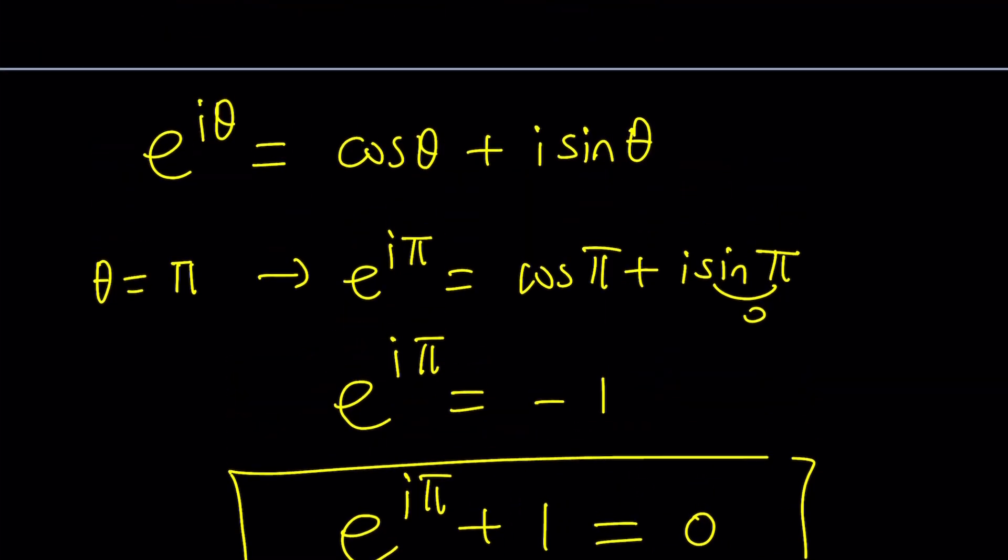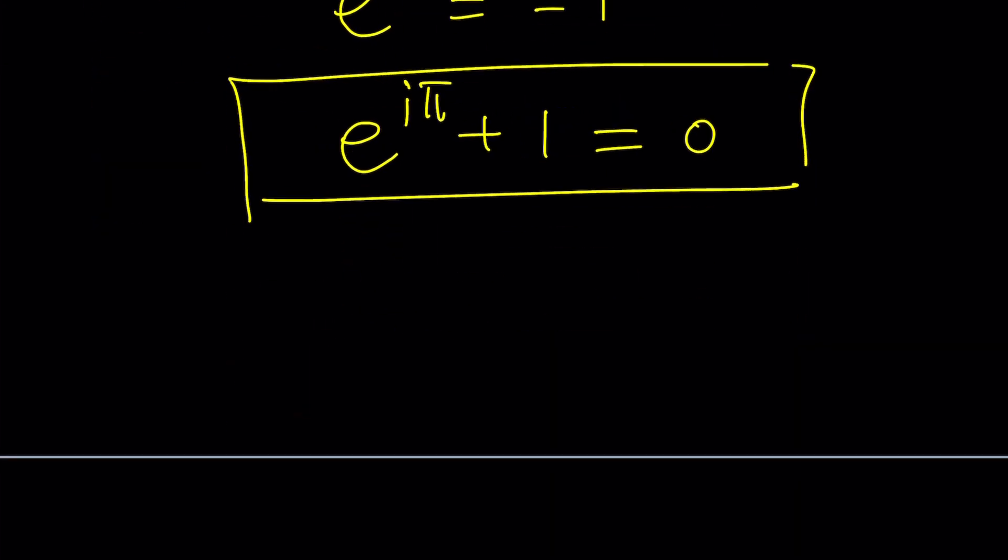And now we're going to use it to our advantage. How do we use this though? This is e to the i theta. So we're going to go ahead and add one to it. Because this is z and I want to find the absolute value of z plus one. So we're going to find the absolute value of the following number. What is e to the i theta again? Cosine theta plus i sine theta plus one.